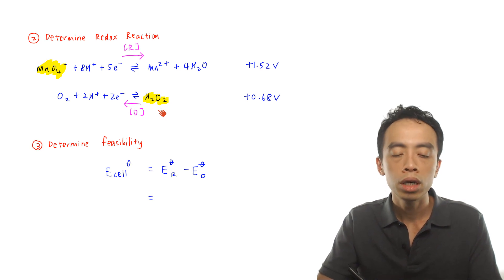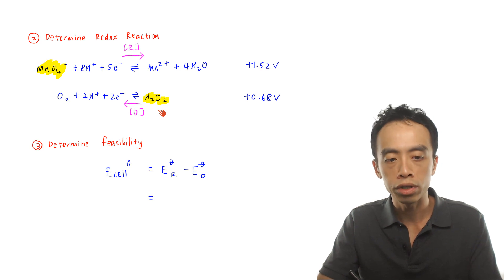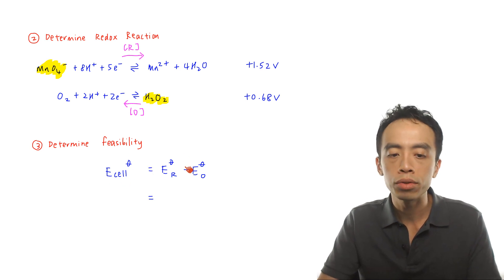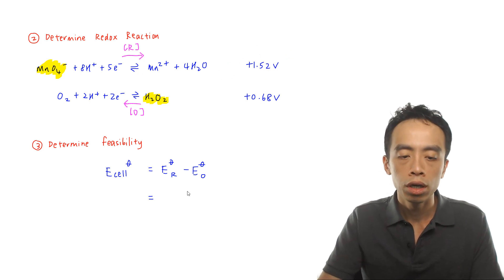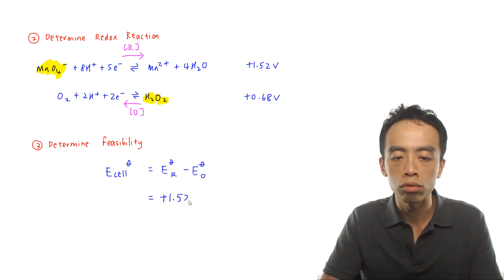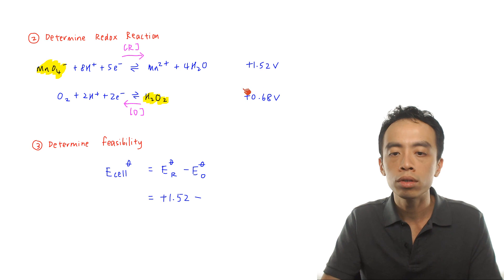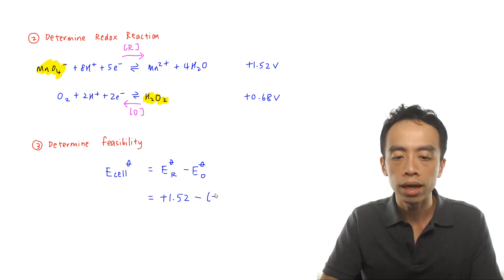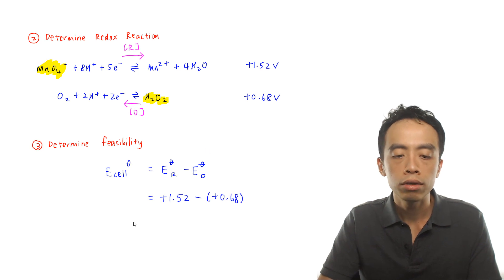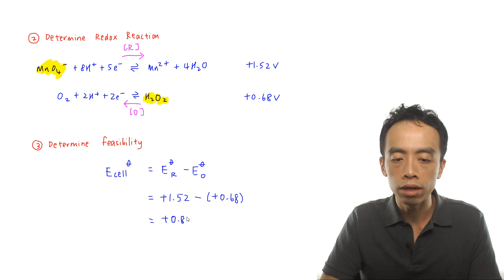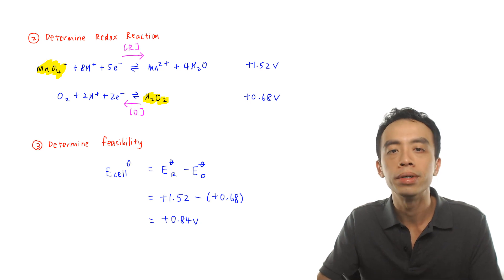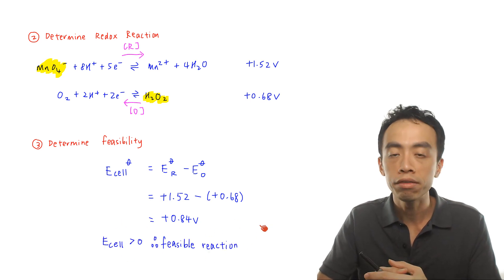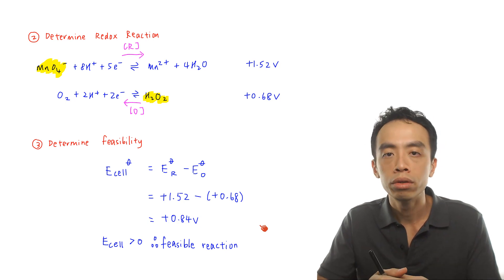To determine the feasibility of this redox reaction, we use the formula: standard E cell = standard E reduction − standard E oxidation. E reduction = +1.52 V, E oxidation = +0.68 V, so E cell = 1.52 − 0.68 = +0.84 V. Since the standard E cell is a positive value, this redox reaction is feasible, and we can proceed to write out the balanced redox equation.